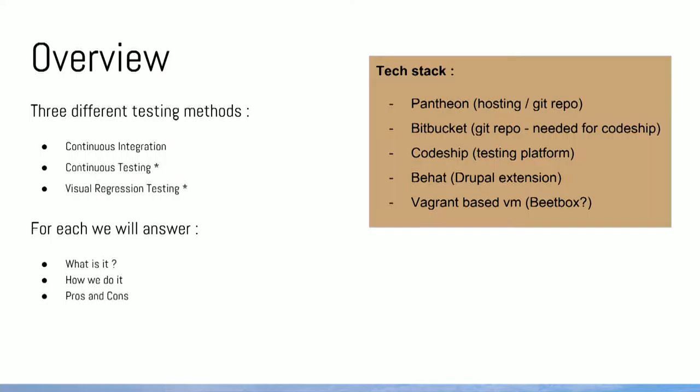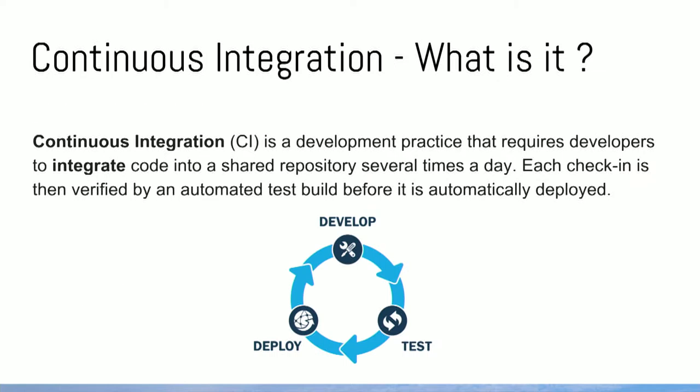For each of these testing methods we'll have a look at what it is, how we implement them, and then pros and cons for each. Continuous integration — what is it? People are probably familiar with the concepts. Basically a development practice where developers constantly check in and integrate code into a shared repository, and then each check-in is verified by an automated test before being deployed.